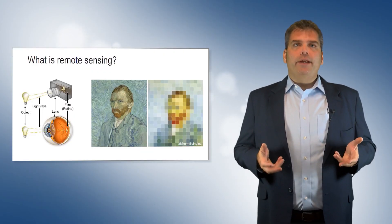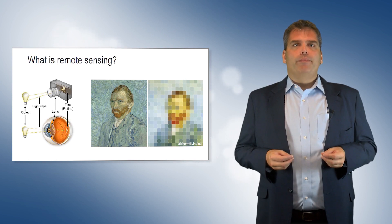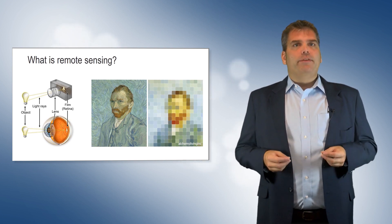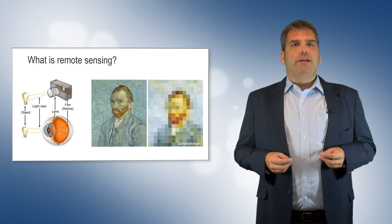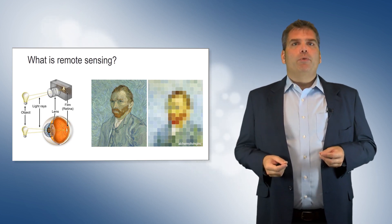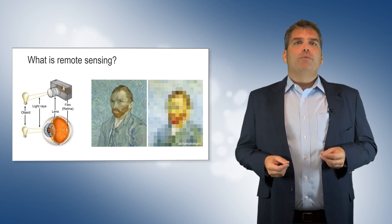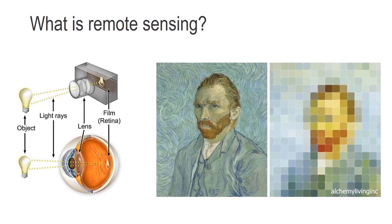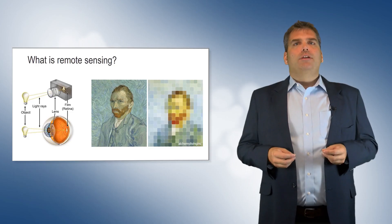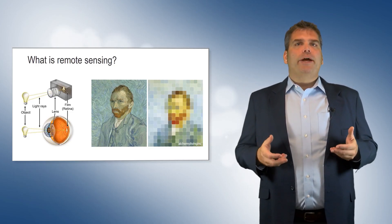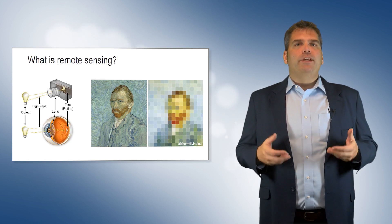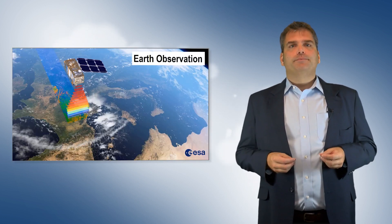Remote sensing is an important category of geospatial data. A remote sensor can be defined as any instrument that collects information without touching it. The human eye, for example, is a remote sensor because it receives light energy from a source without touching it. The digital camera is a more modern remote sensor. A digital camera records light reflected from a surface and stores it as an image. Digital images consist of pixels or grid cells.